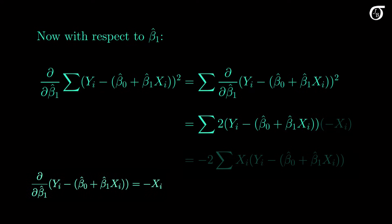Here, as it relates to the derivative, y sub i and beta0 hat do not involve beta1 hat, so those go to 0, and we're left with minus x sub i. So we need to multiply by that.